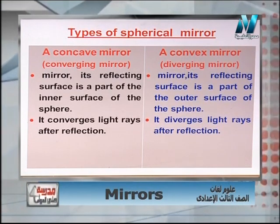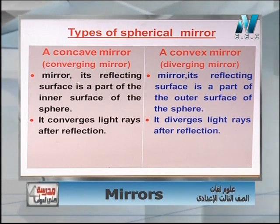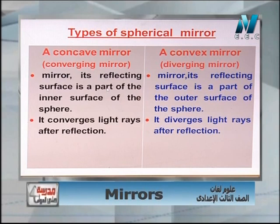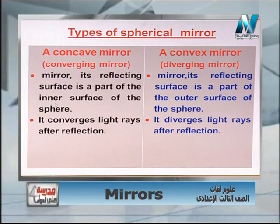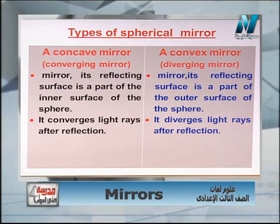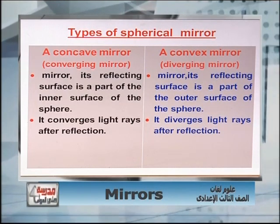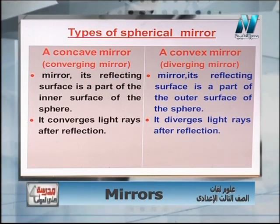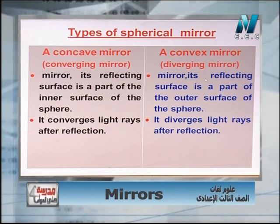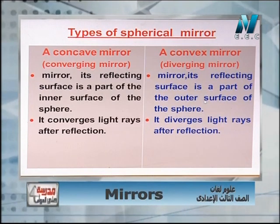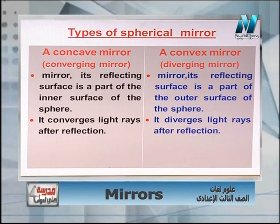What's meant by the concave mirror? Its reflecting surface is the inner part — don't mix them up. Concave is the inner part and is called converging because it collects the rays after reflection. What about the convex mirror? It is called the diverging mirror because its reflecting surface is the outer surface and it diverges the light rays after reflection.